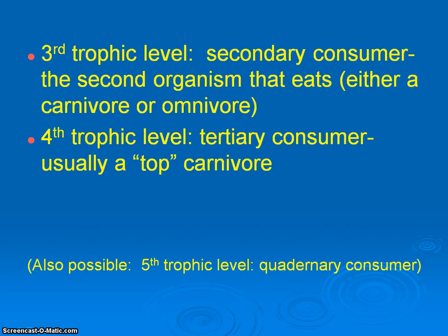The third and fourth levels are getting into the types of consumers that are going to be either omnivores or carnivores. The third trophic level is going to contain your secondary consumers. For example, a hawk is going to capture a rabbit.